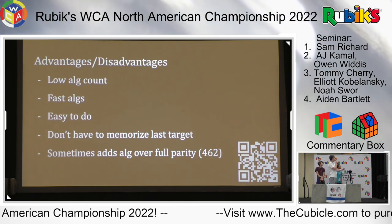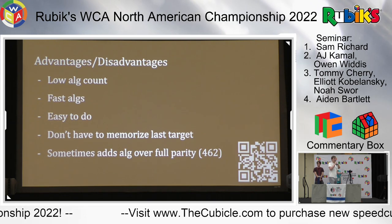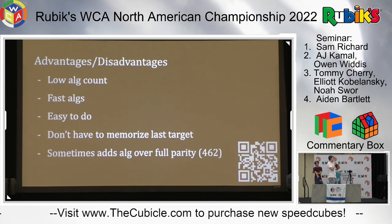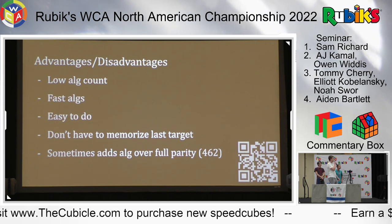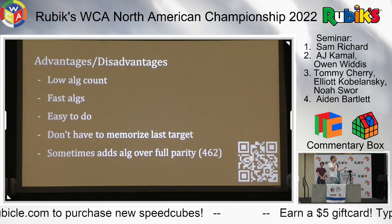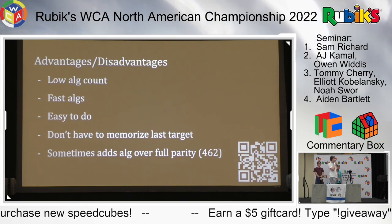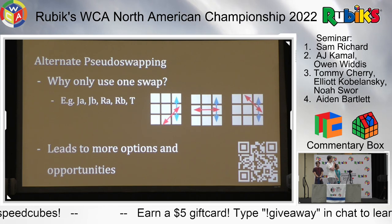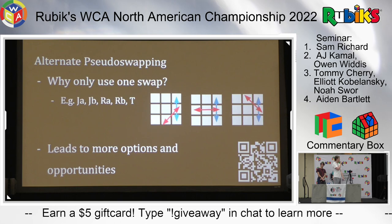Pseudoswapping is very easy to do and becomes almost automatic at the top level. Another benefit: if we always force the last target to be the same, we don't actually have to memorize it. The only disadvantage is that sometimes it'll add an algorithm over full parity - that 462 algorithm set - but it's quite a good trade-off overall.